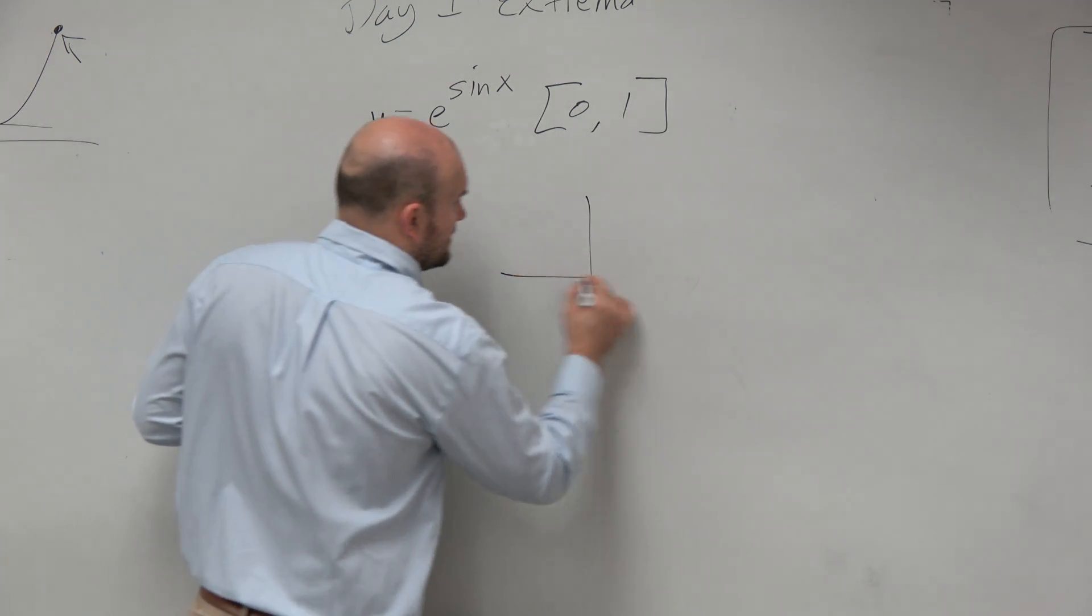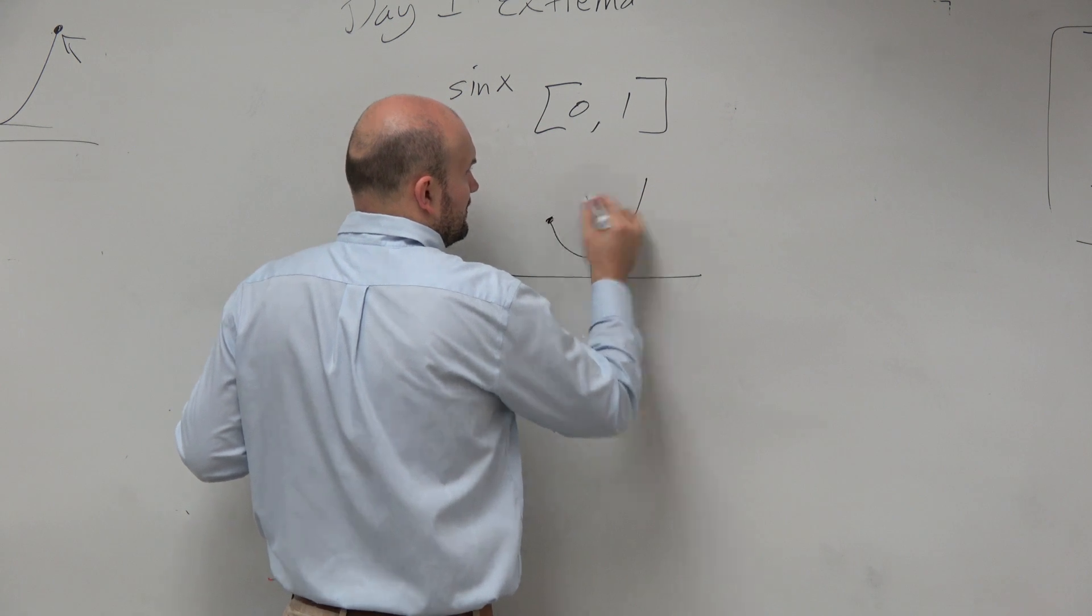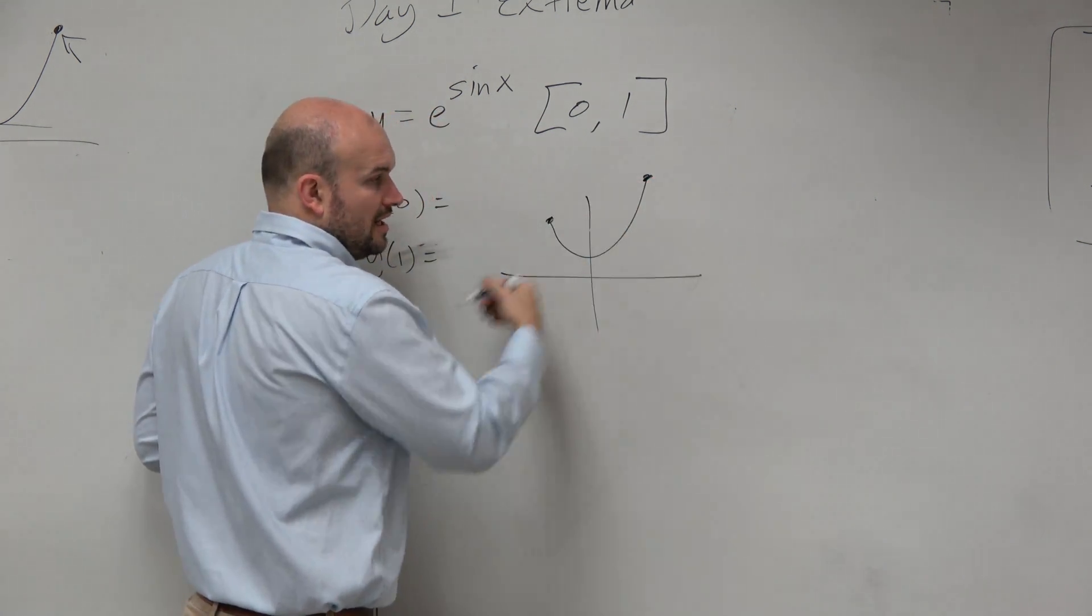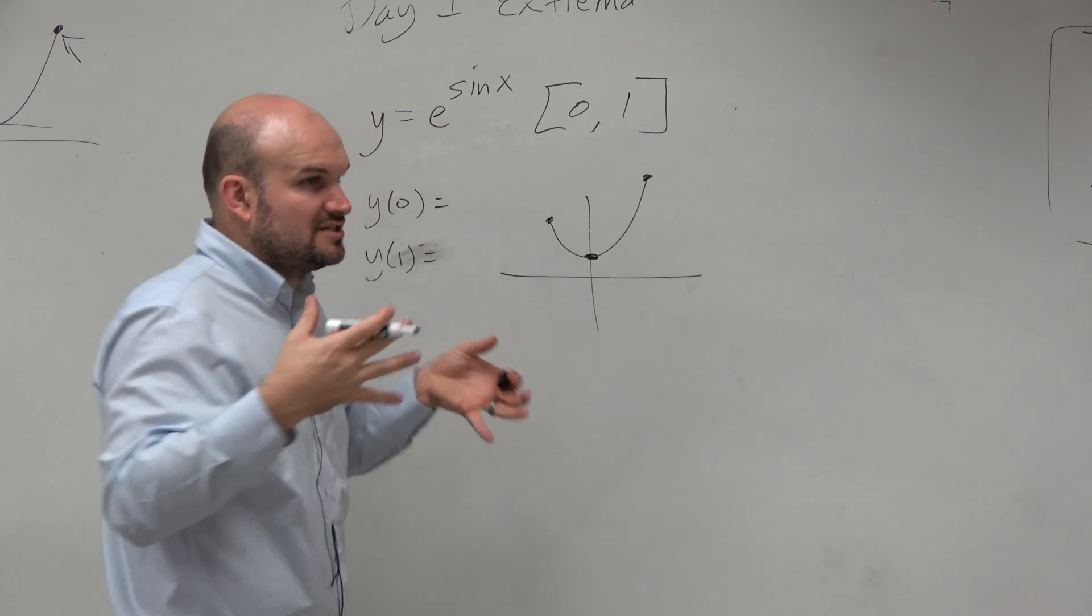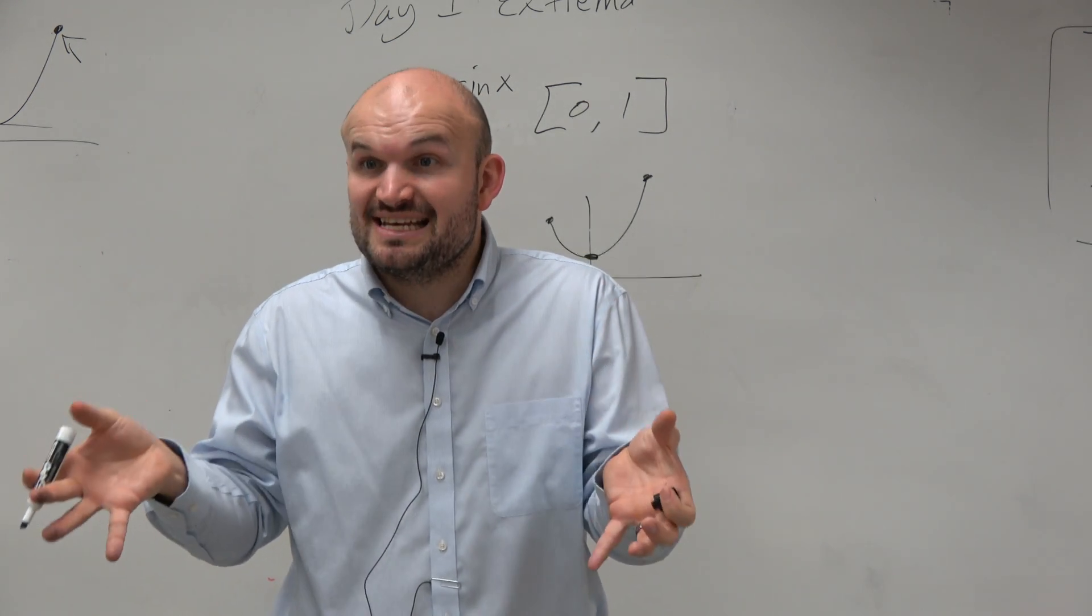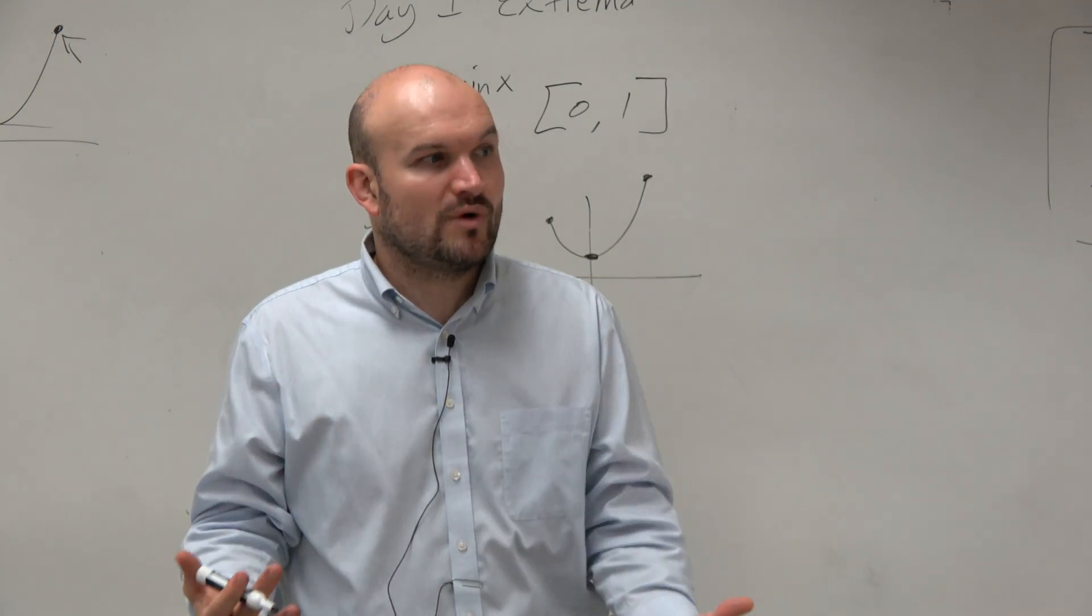For instance, like here, the endpoints are not the max and min. Like, here's the middle. So the EVT just tells us when we know a max and min exist, for sure. But it doesn't tell us where.